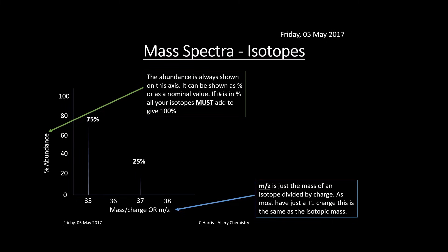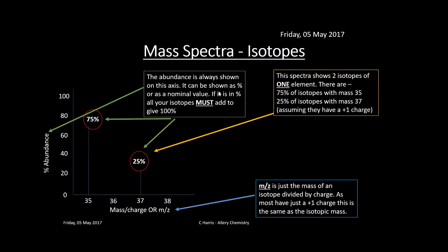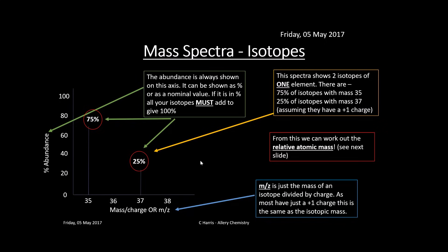Adding the 75 and 25 gives 100. This spectrum shows two isotopes of one element — two peaks means two isotopes. One isotope has a mass of 35, the other has a mass of 37, assuming a 1+ charge. The most abundant isotope is isotope 35; isotope 37 is less common.